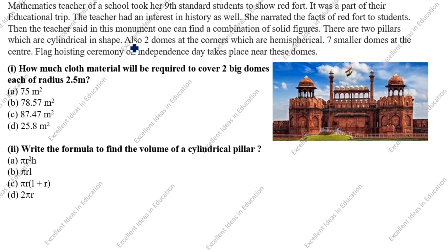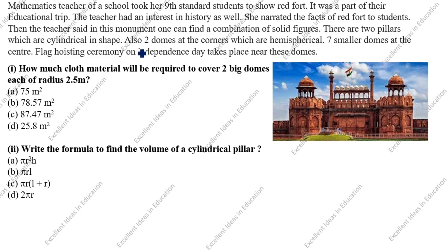There are two pillars which are cylindrical in shape. Also two domes at the corners which are hemispherical. You see two domes at the corner which are hemispherical. Seven smaller domes at the center. Flag hoisting ceremony on Independence Day takes place near these domes.